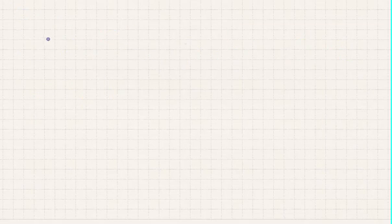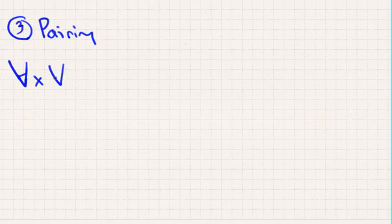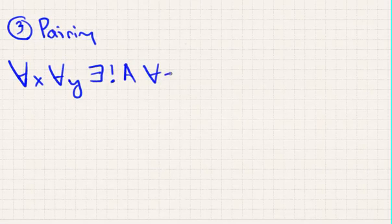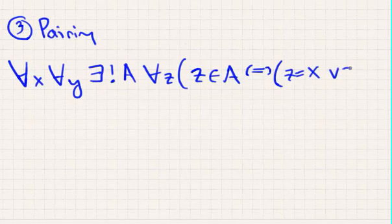Okay, so now let's talk about axiom of pairing. This is the third axiom, axiom of pairing. The axiom of pairing, formally, says that for all sets X and for all sets Y, there exists a unique set A such that for all other sets Z, Z is in A if and only if Z is equal to X or Z is equal to Y.